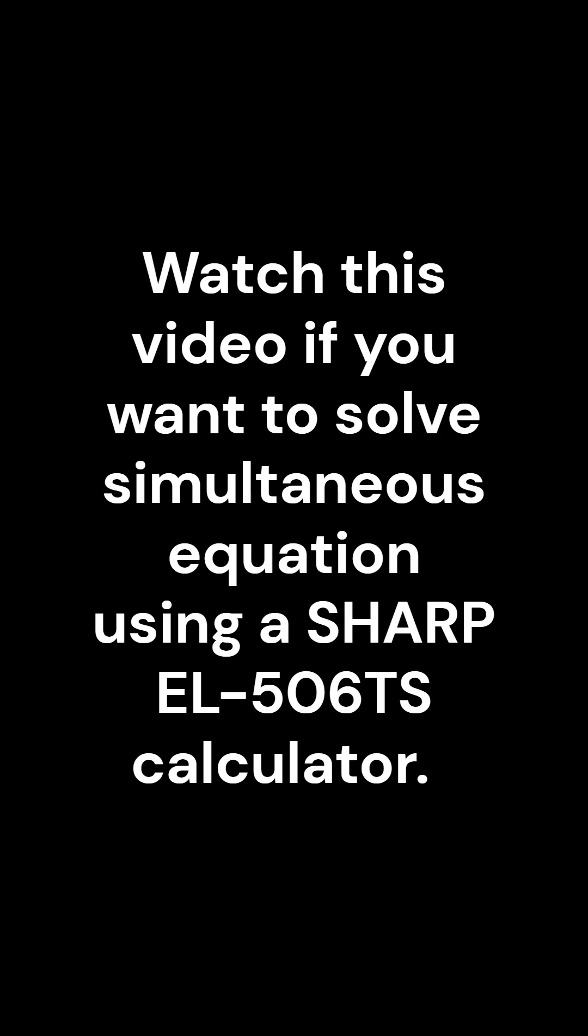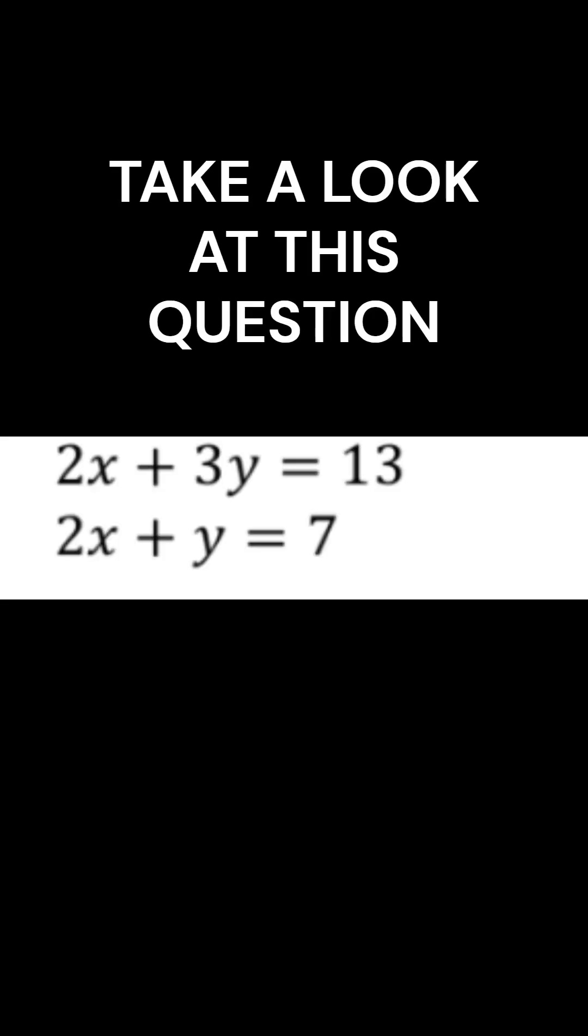Watch this video if you want to solve simultaneous equations using a SHARP EL-506TS calculator. Take a look at this question. Equation 1 is 2x plus 3y equals 13, and equation 2 is 2x plus y equals 7.